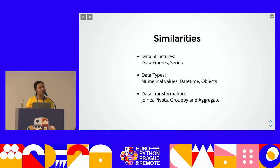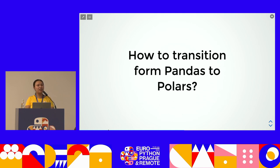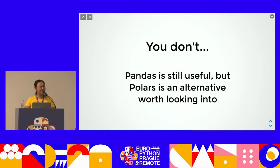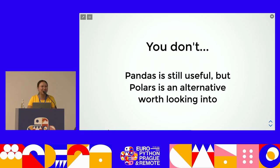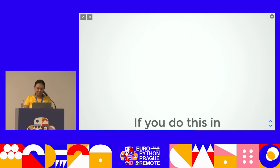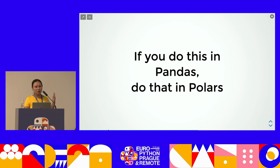Polars also supports a lot of data transformations — you can do joins, pivot, group by, and aggregate very easily. All the things we do day in and day out with pandas you can do with Polars. How do you transition from pandas to Polars? I recommend you try Polars out, but I wouldn't say uninstall all your pandas environments and just use Polars. Pandas is still useful in some scenarios, but maybe your next project is a good time to start trying Polars. The learning curve is easy and you can take advantage of Rust's memory safety and better performance.